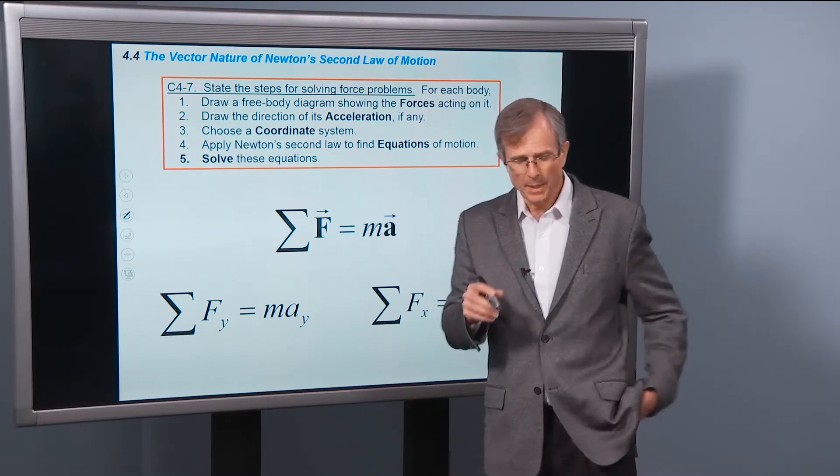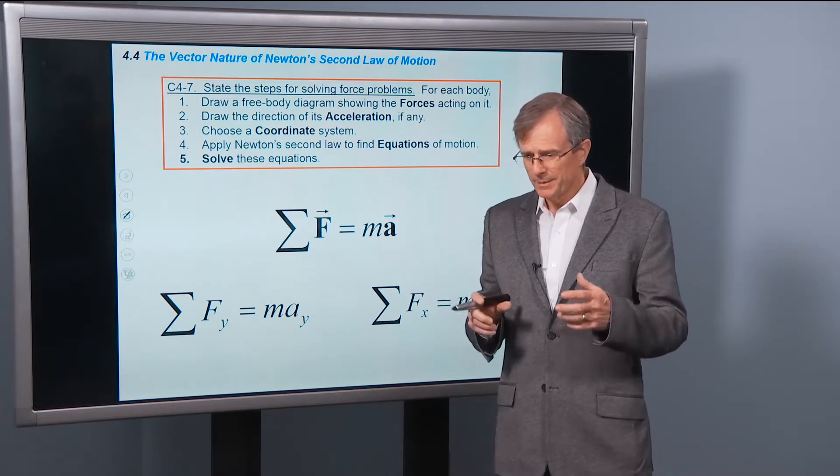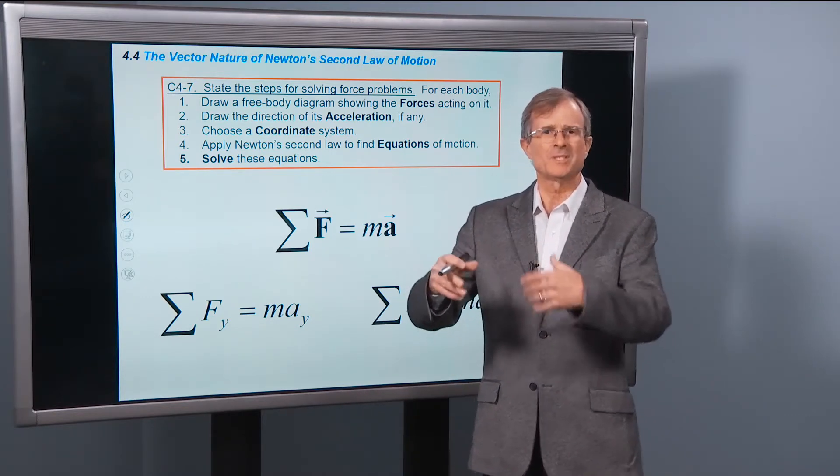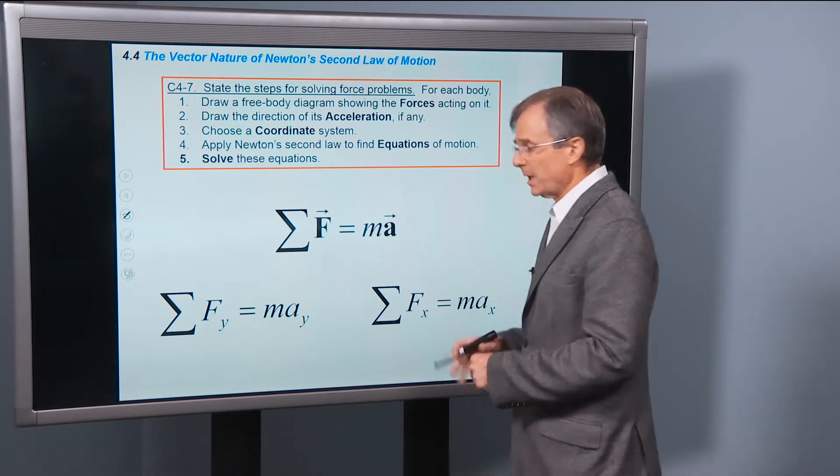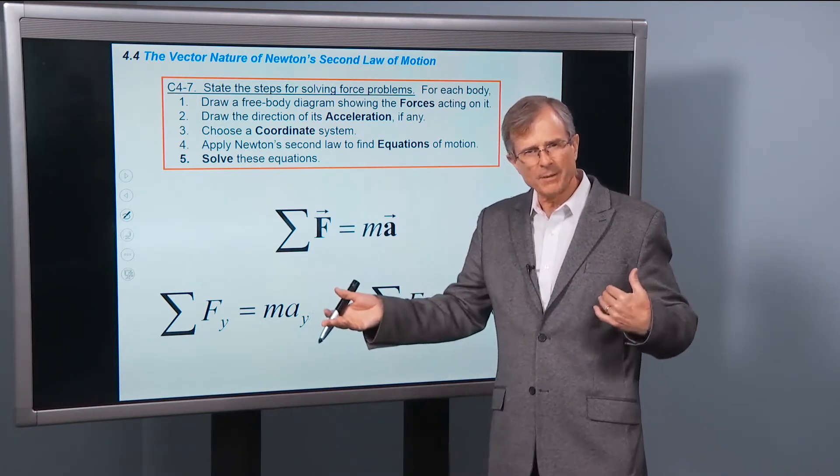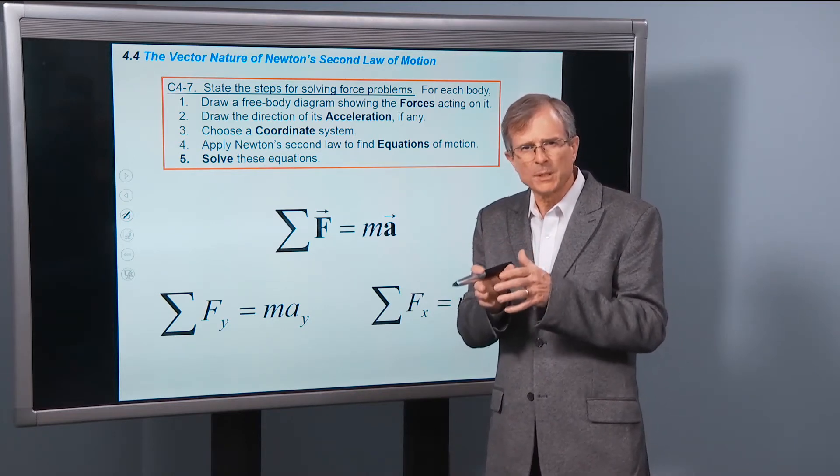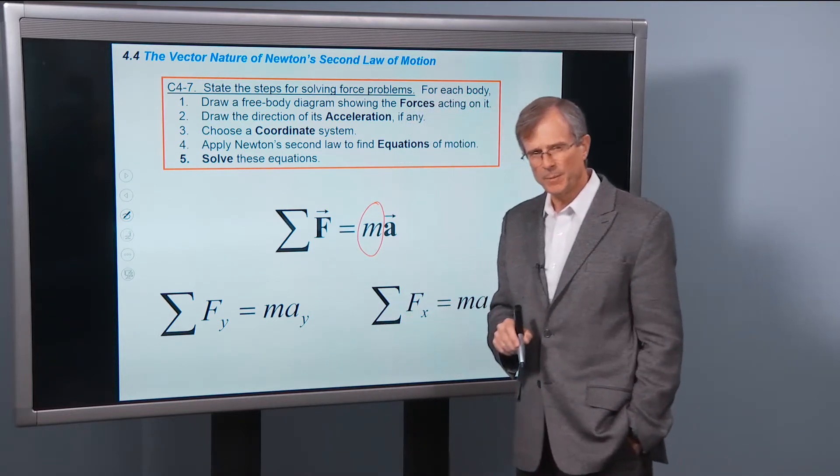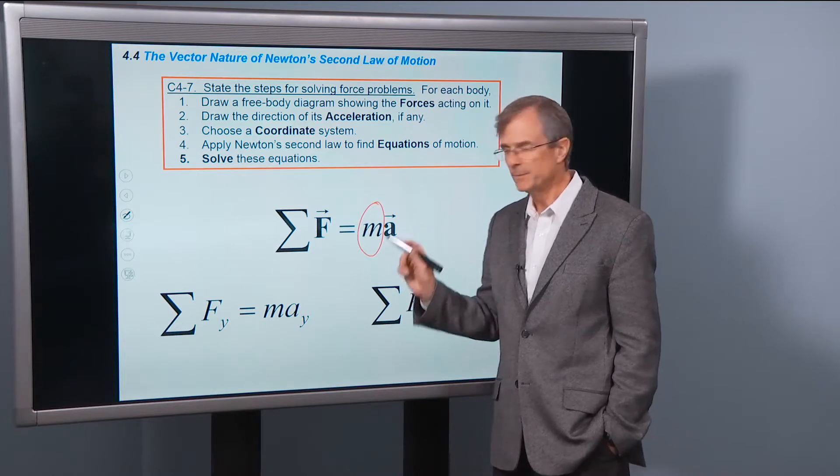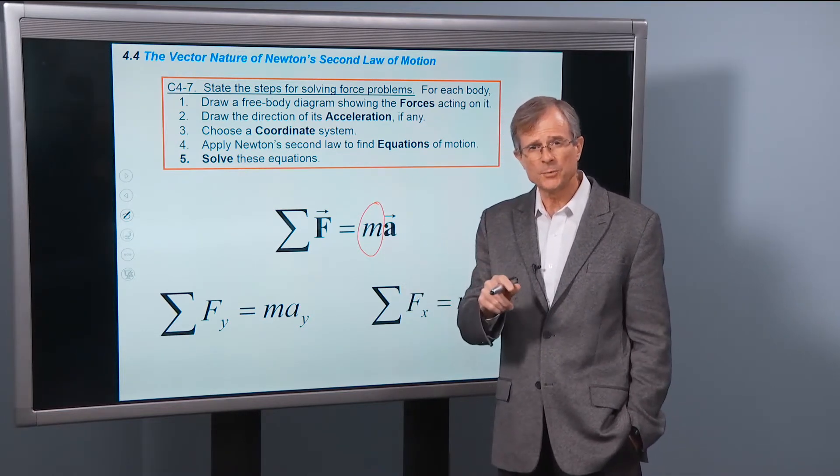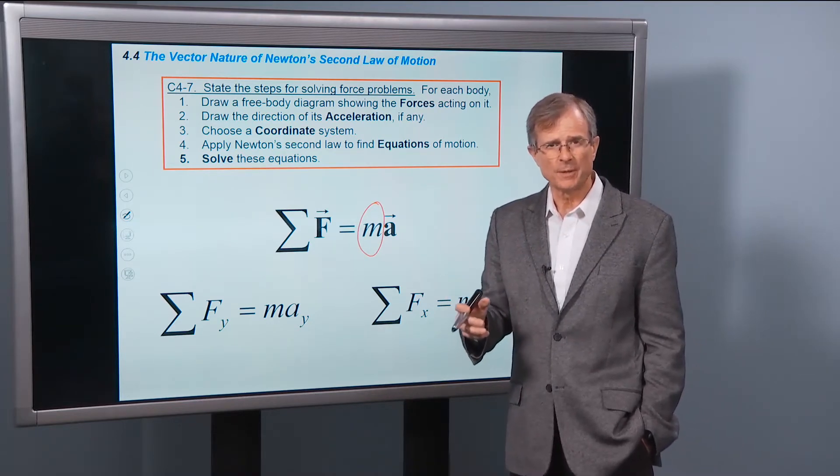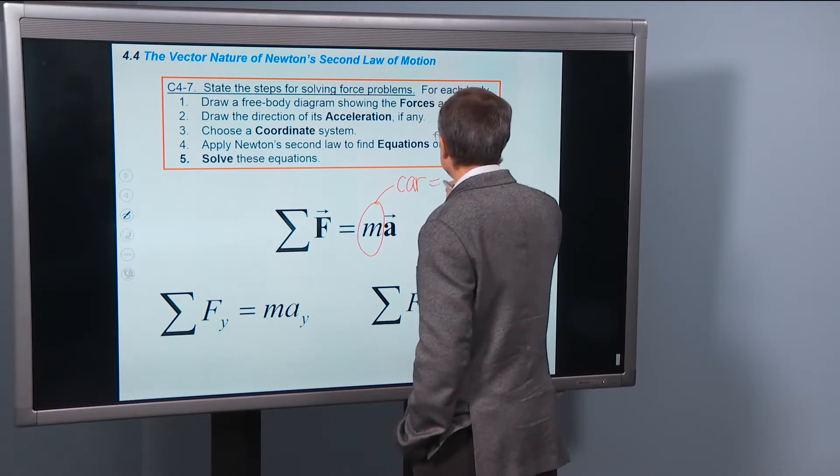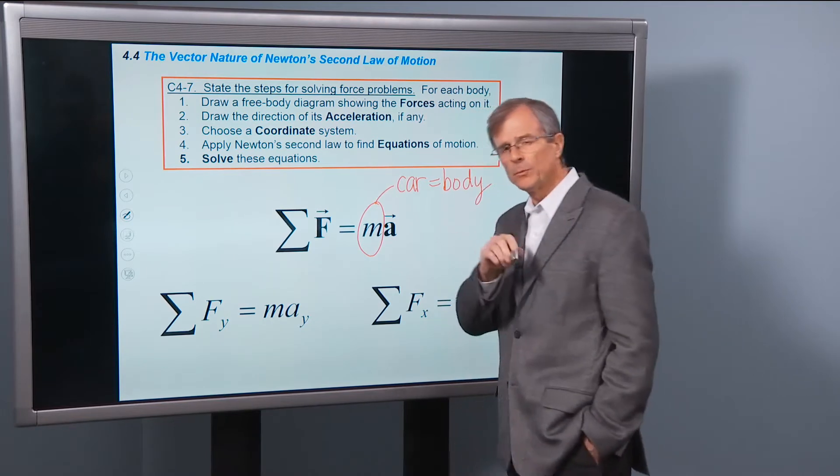Now, by body I mean object. So if you have a car moving along a road, that's a body. And we're asking about the forces on that body. We're not so concerned about the forces that body is exerting on everything else, but the forces that are being exerted on that particular body. So that's why when you first start thinking about applying Newton's second law to a problem, first thing you need to identify is the mass. What body are you interested in? And in the case of the car moving down the street, it would be the car, for example.